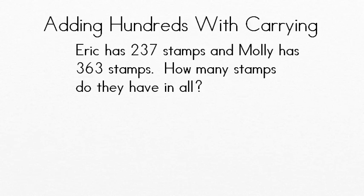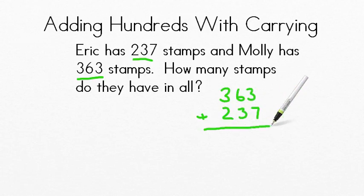Finally, we have a word problem here. Eric has 237 stamps. And Molly has 363 stamps. How many stamps do they have in all? Use one of your two methods to figure out the answer here. Remember we're adding. So we have the two numbers. 237 plus 363. Put them together. 363 plus 237. Use one of the two methods you've been taught today.